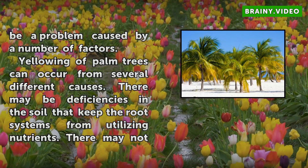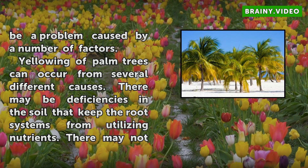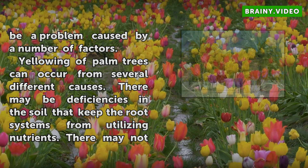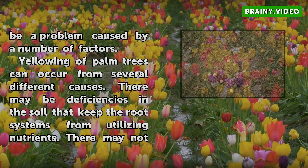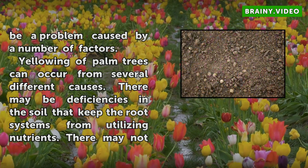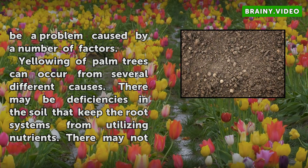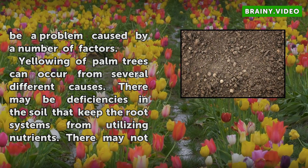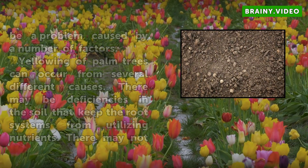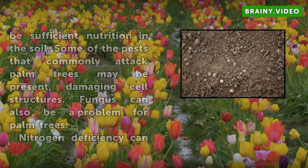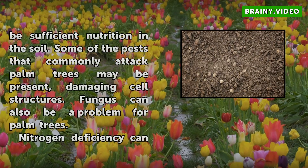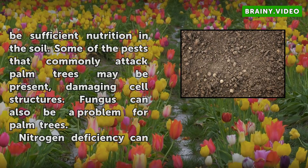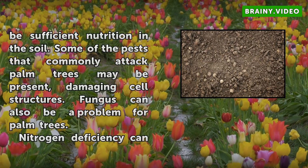Yellowing of palm trees can occur from several different causes. There may be deficiencies in the soil that keep the root systems from utilizing nutrients, or there may not be sufficient nutrition in the soil. Some of the pests that commonly attack palm trees may be present, damaging cell structures.